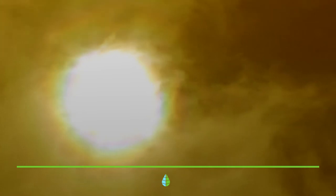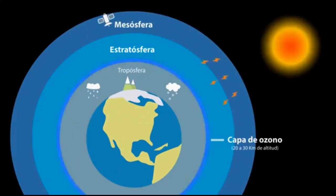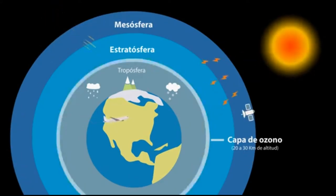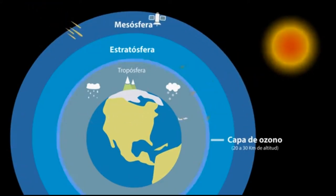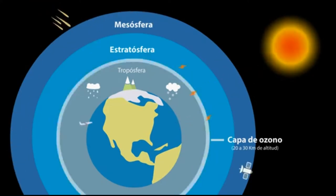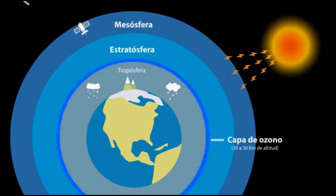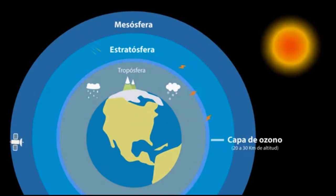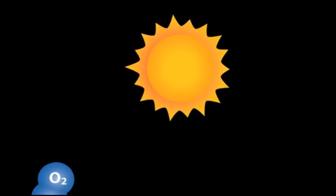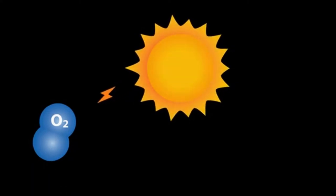La capa de ozono es una zona de la atmósfera que se encuentra entre los 15 y los 50 kilómetros por encima de la superficie de la Tierra. En ella se producen concentraciones de ozono de hasta 10 partes por millón. En la llamada zona fotoquímica de la alta atmósfera, sobre los 60 kilómetros de altitud, el ozono se produce al actuar sobre ella los rayos ultravioletas del Sol.